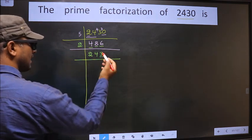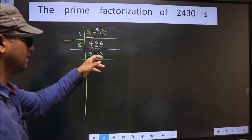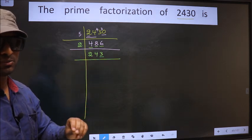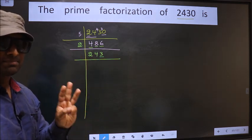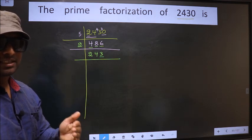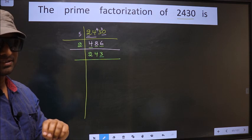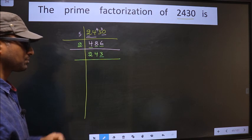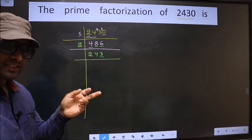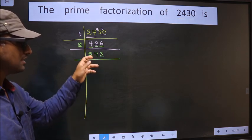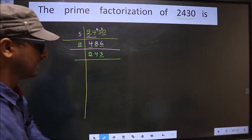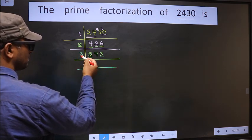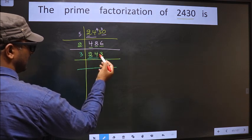Now for this number, the last digit is 3, which is not even, so this number is not divisible by 2. Next prime number is 3. To check divisibility by 3, we should add the digits, that is 2 plus 4 plus 3. We get 9. Is 9 divisible by 3? Yes. So this number is also divisible by 3. So we take 3 here. The first number is 2; 2 is smaller than 3, so we should take 2 numbers, that is 24.